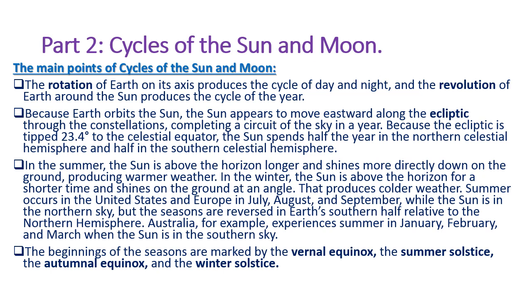In summer, the sun is above the horizon longer and shines more directly down on the ground, producing warmer weather. In winter, the sun is above the horizon for a shorter time and shines on the ground at an angle that produces colder weather.